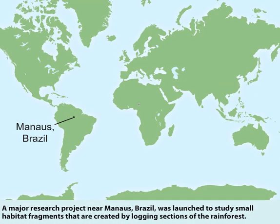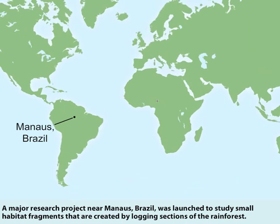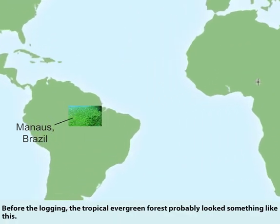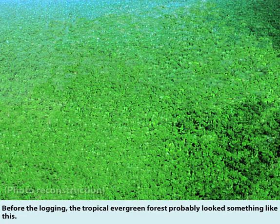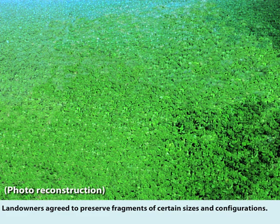A major research project near Manaus, Brazil, was launched to study small habitat fragments that are created by logging sections of the rainforest. Before the logging, the tropical evergreen forest probably looked something like this. Landowners agreed to preserve fragments of certain sizes and configurations.